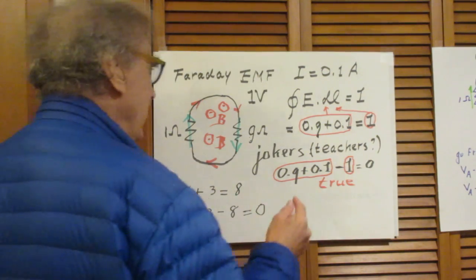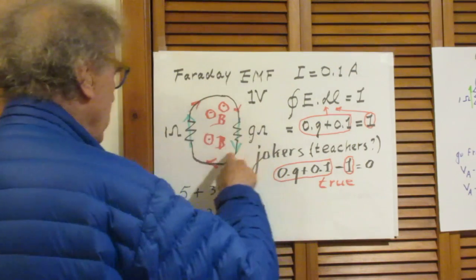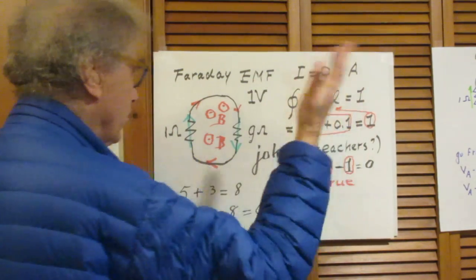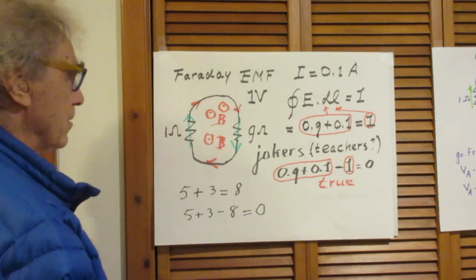Now, according to Faraday's law, the closed loop integral going around of E dot L is 1. That's the EMF. So that's non-negotiable. That's Faraday's law.